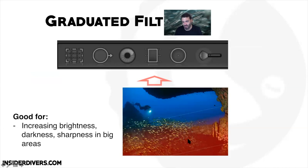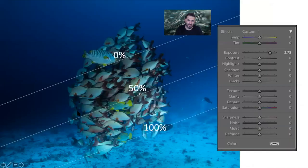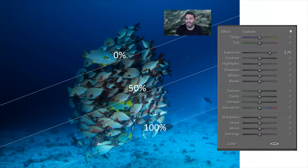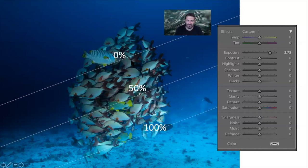We're going to start with the graduated filter — it's the easiest to manage. You can see I've ticked it, dragging something up, and the bottom is red and then it gets less red towards the top. This is a really useful tool for increasing brightness in very dark areas or reducing brightness in very bright areas, and also for applying sharpness to corners. Until the first line you're getting 100% of the effect, and over the next two lines it goes down to zero.